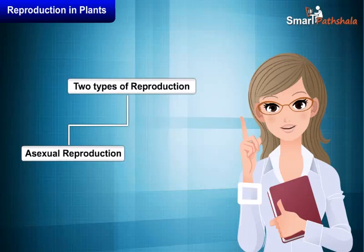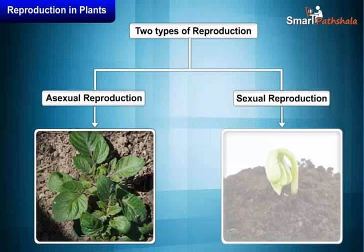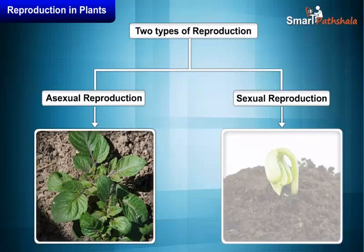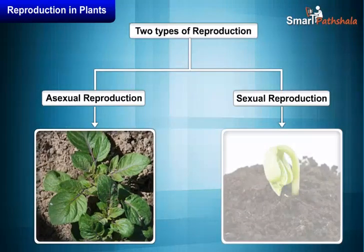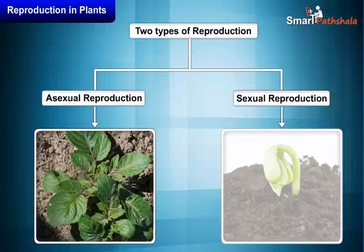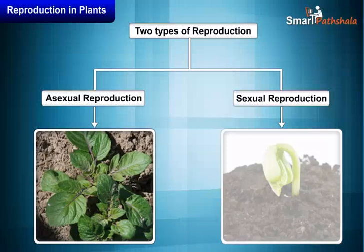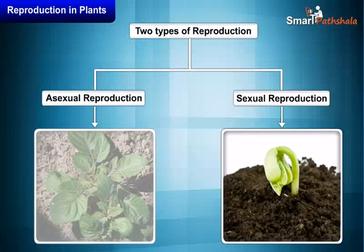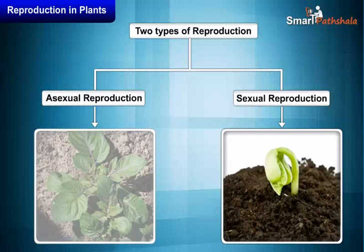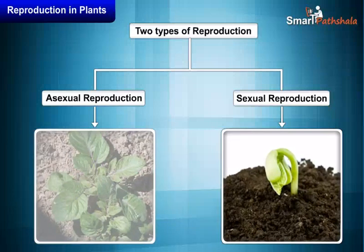Two types of reproduction — namely asexual reproduction and sexual reproduction — take place in plants. In asexual reproduction, plants can give rise to new plants without seeds. Whereas in sexual reproduction, new plants are obtained from seeds.